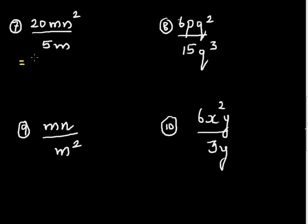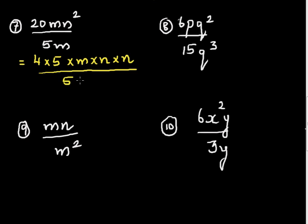Working through the solutions: for 20mn squared divided by 5m, write it as 4 times 5 times m times n squared divided by 5 times m. The 5s cancel and the m's cancel, leaving 1 in the denominator. So the final answer is 4n squared divided by 1, which is 4n squared.